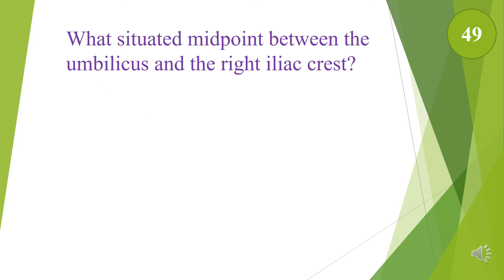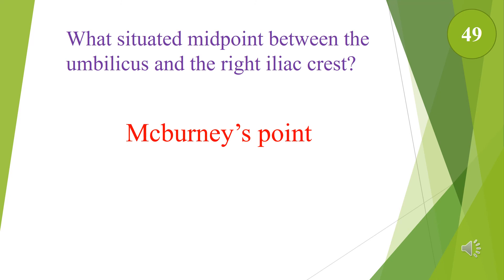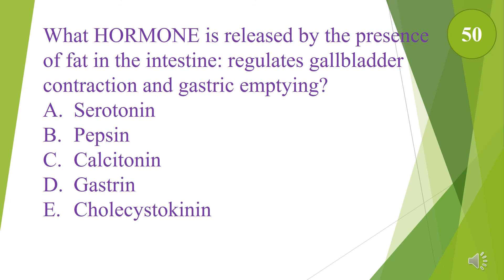What is situated midpoint between the umbilicus and the right iliac crest? That is McBurney's point — it will be on the board exam. What hormone is released by the presence of fat in the intestine and regulates gallbladder contraction and gastric emptying? A. Serotonin. B. Pepsin. C. Calcitonin. D. Gastrin. E. Cholecystokinin. The answer is E, cholecystokinin (CCK).